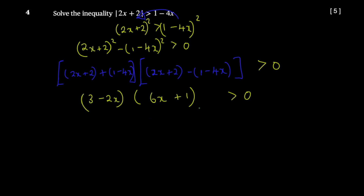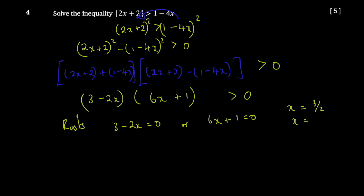Now find the roots by setting each factor to zero. Setting 3 - 2x = 0 gives x = 3/2. Setting 6x + 1 = 0 gives x = -1/6. These are your two roots. Now you can go ahead and draw your graph.